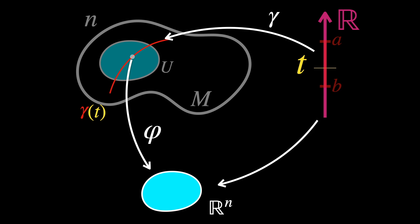This gives us a composite function, made of combining two functions together. When you compose Phi and Gamma, you're essentially translating the curve from the abstract manifold M to the local coordinates of Euclidean space Rn.